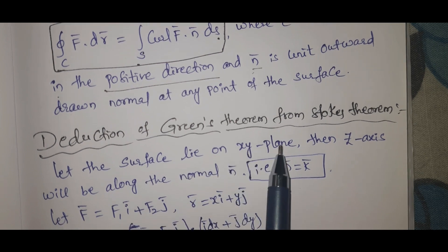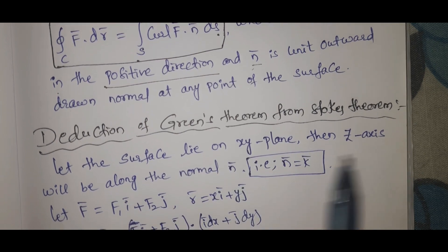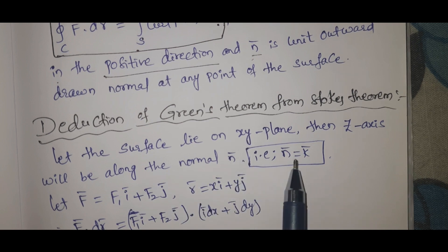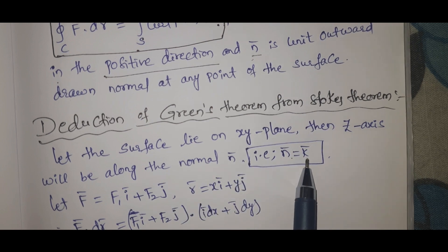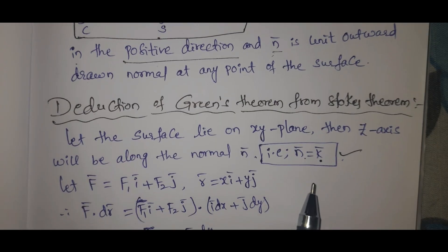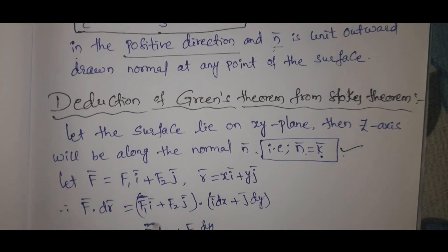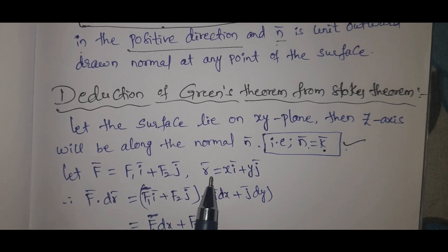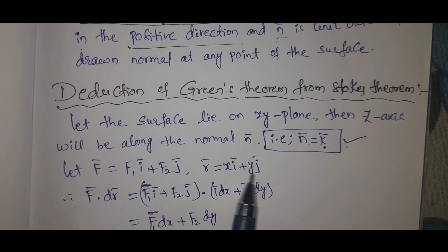Let the surface lie on the xy plane, then the z-axis will be along the normal n bar. N bar equal to k bar - here is the positive direction.